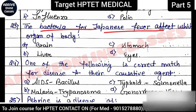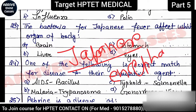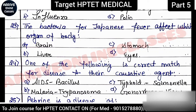Next question: 'The bacteria for Japanese fever — which organ does it affect?' The causal organism of Japanese encephalitis — despite the name 'bacteria' in the question, it is actually a viral disease. It affects the brain — option A is the correct answer.